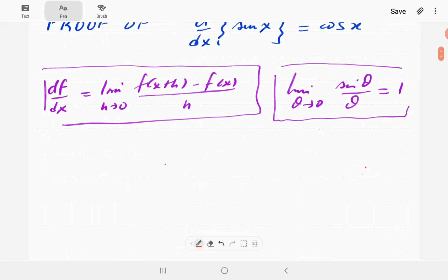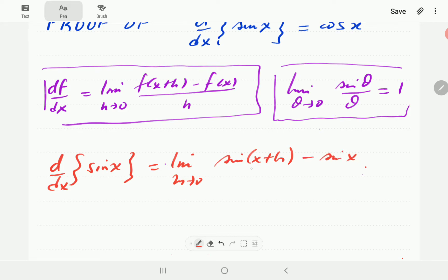Okay, so the derivative then of sine x is going to be d/dx of sine x, which is equal to the limit as h goes to 0 of sine of x plus h minus sine x all divided by h.